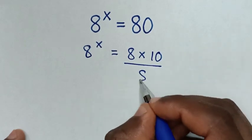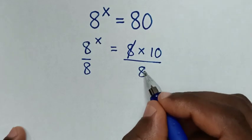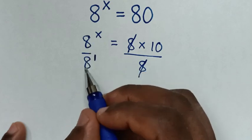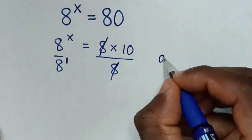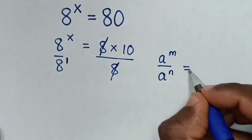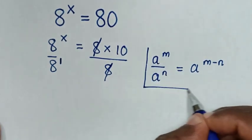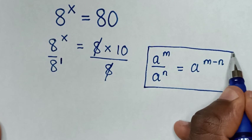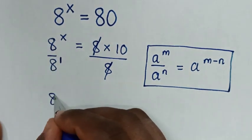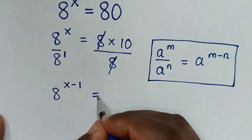In the next step we divide by 8 on both sides, so this 8 and this will cancel. Then, since 8 is the same as 8 power of 1, we apply the division of exponents rule: a power of m over a power of n is equal to a power of m minus n.